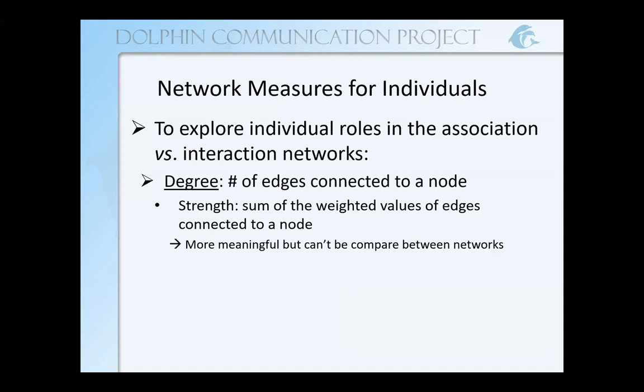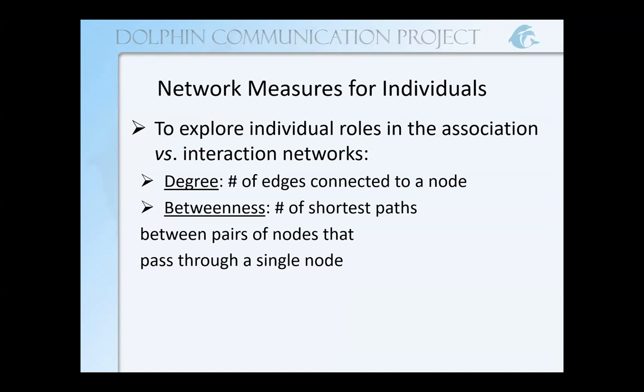Unfortunately, because we're using coefficients of association for our association network and number of interactions for our interaction network, we can't actually compare strength between the two. So instead we just stick with degree — the number of associates or interaction partners that each dolphin had. Another measure we can use is betweenness, which is the number of shortest paths between pairs of nodes that pass through a single node.